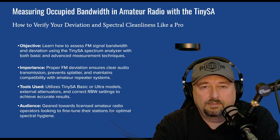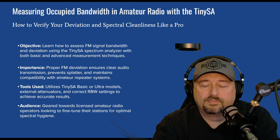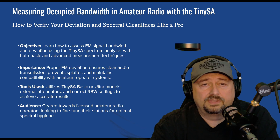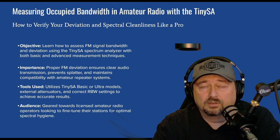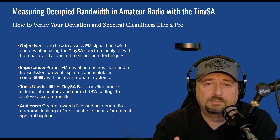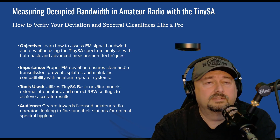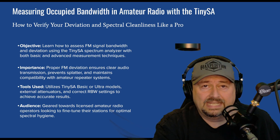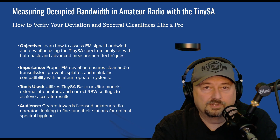When we talk about occupied bandwidth, we talk about the amount of spectrum required to transmit your signal. With 2 meter and 70 centimeter FM analog mode, we use FM modulation, meaning we transmit a carrier signal along with some encoded information. That encoded information is voice data. You could do other things, but FM analog is mostly voice.